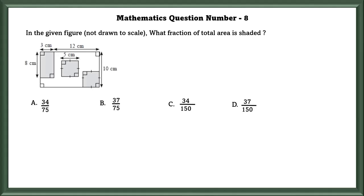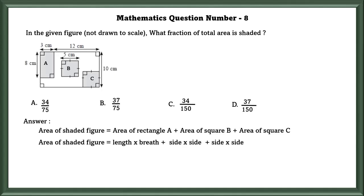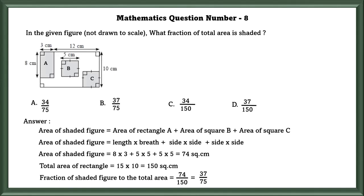Mathematics Question Number 8: In the given figure, what fraction of total area is shaded? We will take this rectangle as rectangle A, this square as B, and this other square as C. Area of shaded figure is equal to area of rectangle A plus area of square B plus area of square C. If we substitute the values and add, we will get 74 square centimeters as the area of shaded figure. They have asked what is the fraction of total area that is shaded? So in order to find fraction, we have to find the total area of the rectangle, that is equal to 150 square centimeters. So fraction of shaded figure to the total area is equal to 74/150, which is equal to 37/75, that is B.